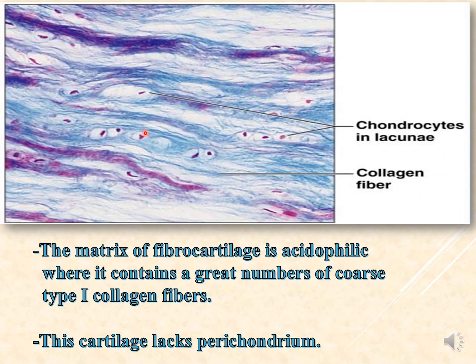In another image of fibrocartilage, one can see the small regions of hyaline cartilage composed of chondrocytes, and the surrounding dense connective tissue composed of collagen bundles running either parallel to each other or irregularly between the chondrocytes. The matrix of fibrocartilage is acidophilic in nature and contains a large number of collagen type 1 fibers. This cartilage also lacks a perichondrium.